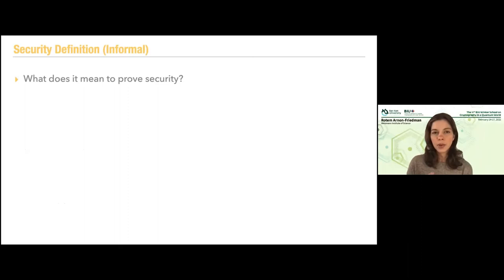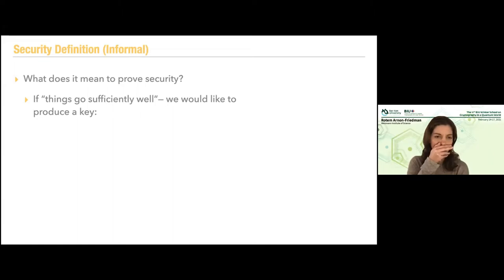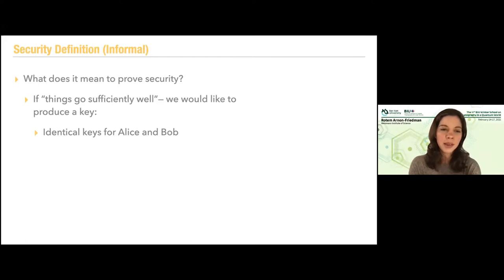First, informally: what does it mean to prove security of a QKD protocol? If things go sufficiently well — if we don't detect too many errors — we would like to produce a key. We don't want the protocol to abort. In this case, we want the keys to be identical for Alice and Bob. We want them to end up with the same keys. This is what we call correctness.